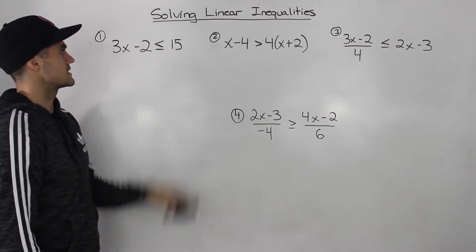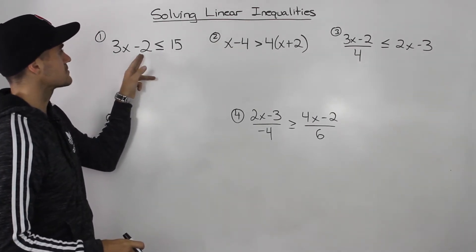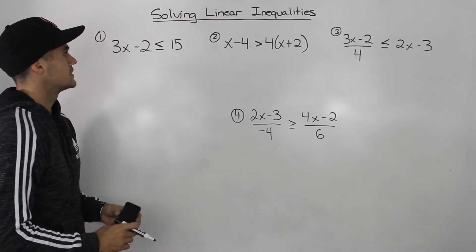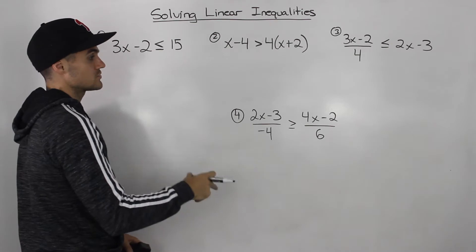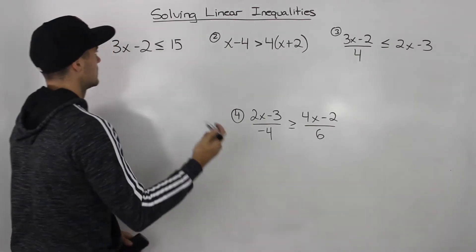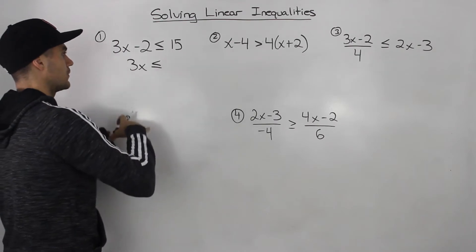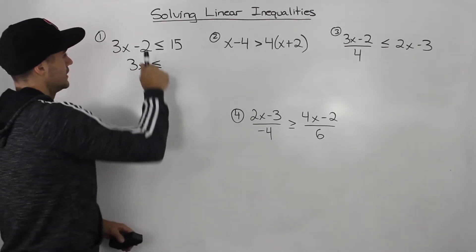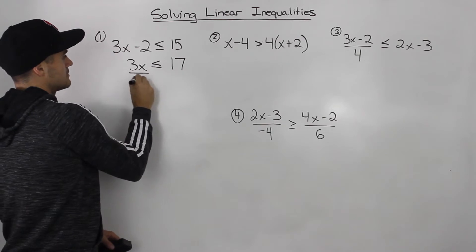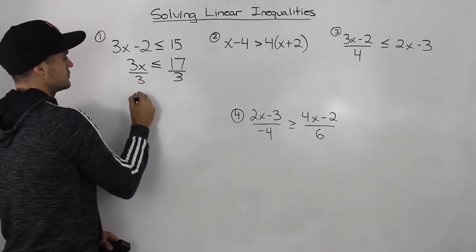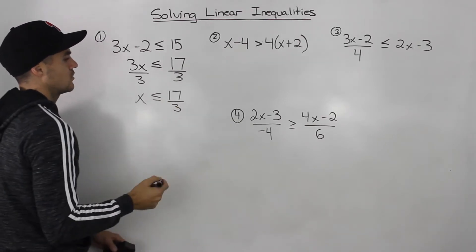Starting with this first one: 3x minus 2 is less than or equal to 15. Another way to word it is to find when is 3x minus 2 less than or equal to 15. So these inequality symbols — less than, greater than, less than or equal to, greater than or equal to — you want to treat like equal signs. Put all the variables on one side, put all the numbers on the other, like we're solving an equation. So this negative 2 would come over, 15 plus 2 gives us 17. Then to isolate for x, divide both sides by 3. Our final answer is x is less than or equal to 17 over 3.